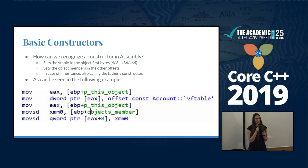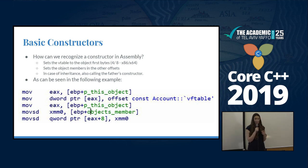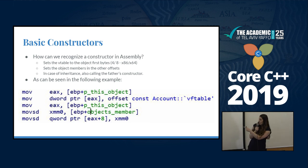We're going to talk about basic constructors — how you can recognize a constructor from the code. The first thing to look for in a constructor is the Vtable assignment to the object. The Vtable is assigned to the first four or eight bytes of the object, depending on whether it's a 32-bit or 64-bit binary. You also have the members of the object just after the Vtable pointer, plus all member pointers or values. In case of inheritance, you will also see a call for the constructor of the parent class.